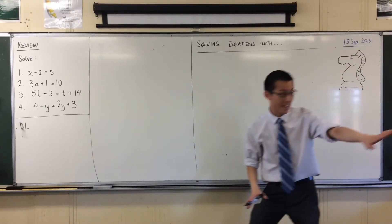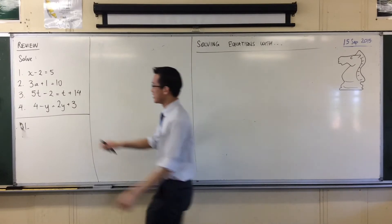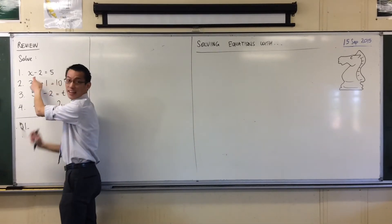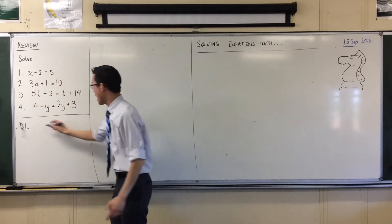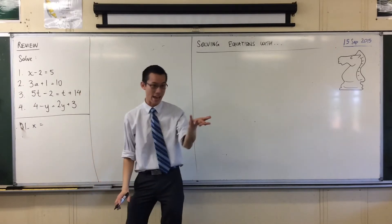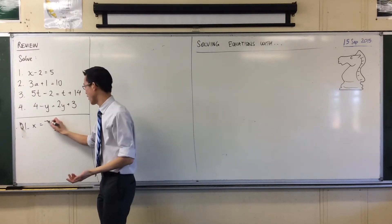Don't tell me the answer, tell me what to do. Yeah? Good, I add 2 to both sides. That's going to get rid of my minus 2, and when I put it on the right hand side, when I add 2, I get 7. That was fantastic.